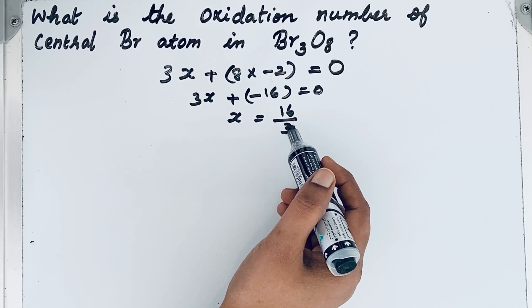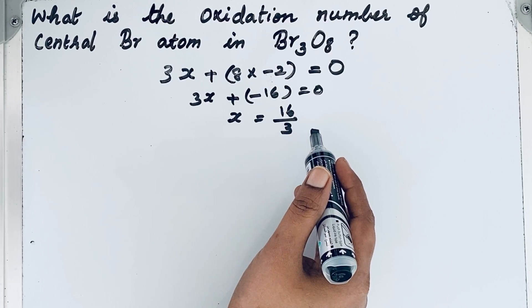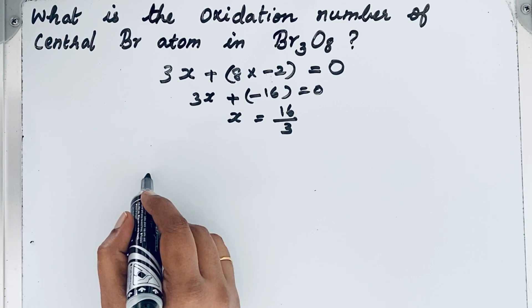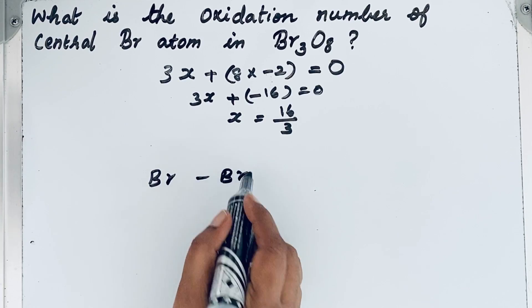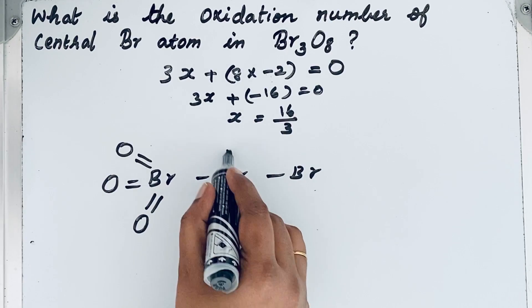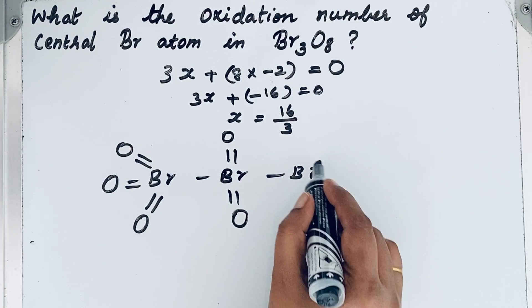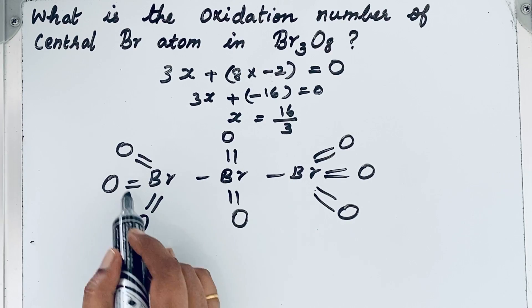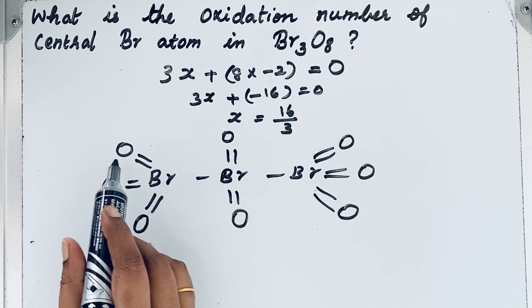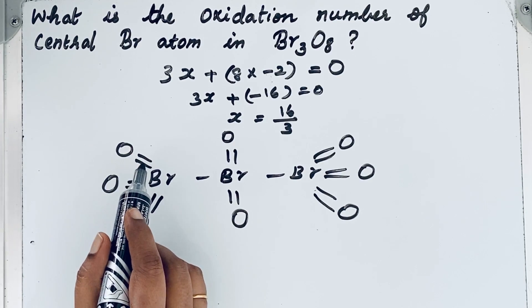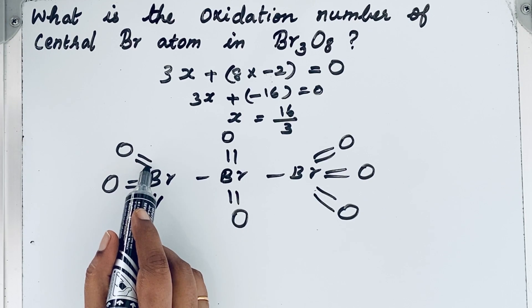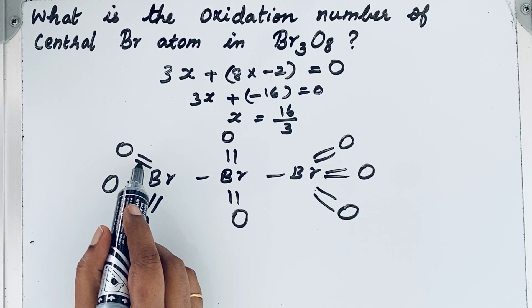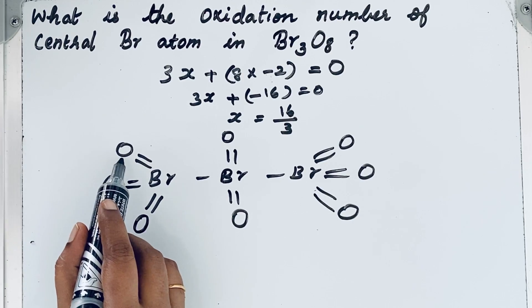To understand the true oxidation numbers, you need to look at the structure. There are three bromine atoms in Br₃O₈. The terminal bromine atoms are each attached to three oxygen atoms. Since oxygen is highly electronegative, in oxidation number calculations we assume the electrons in each bond belong to the more electronegative atom, meaning bromine has lost those electrons to oxygen.